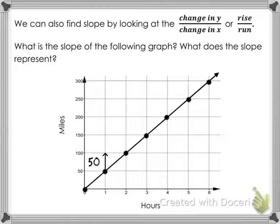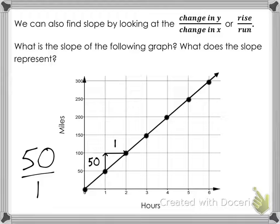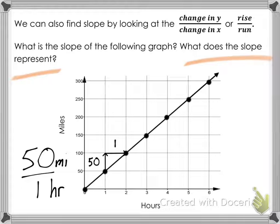To find the rise over run, start at any one of your dots and rise to the height of a second dot — it could be above or below — and then run to that dot, creating a little triangle. We rose 50 and ran 1 to the next dot, so the slope is 50 over 1. The y-axis is counting miles, so from 50 to 100 is an increase of 50, and between x-values 1 and 2 is a span of 1. So the rise was 50, the run was 1, and the slope is 50.